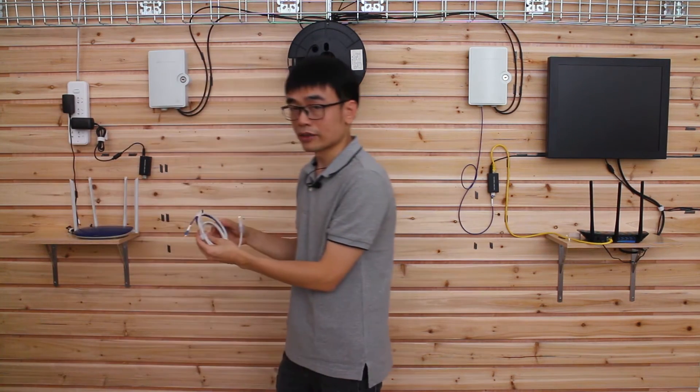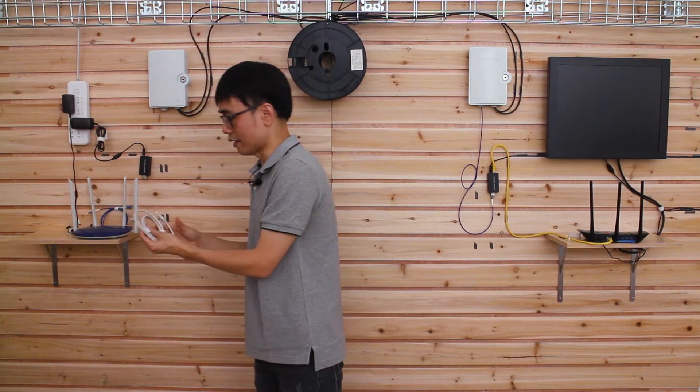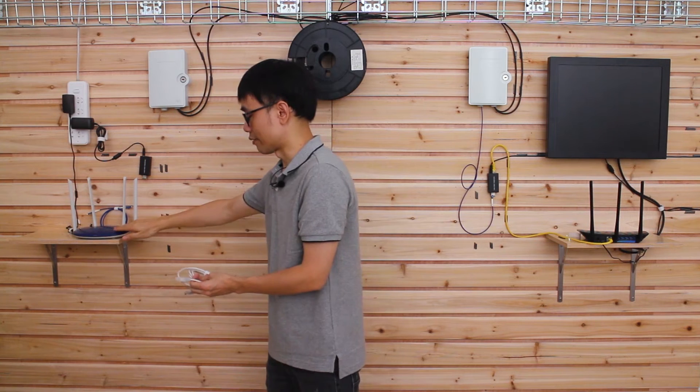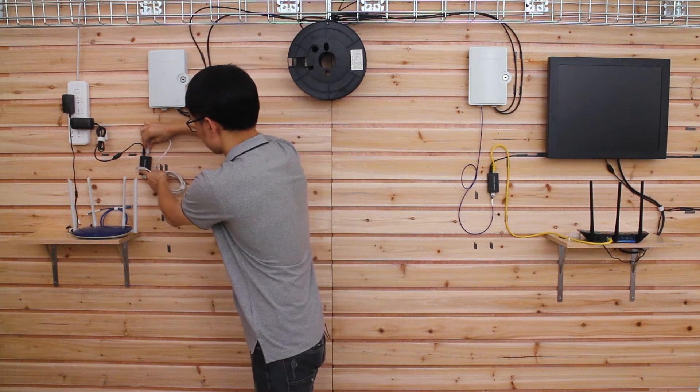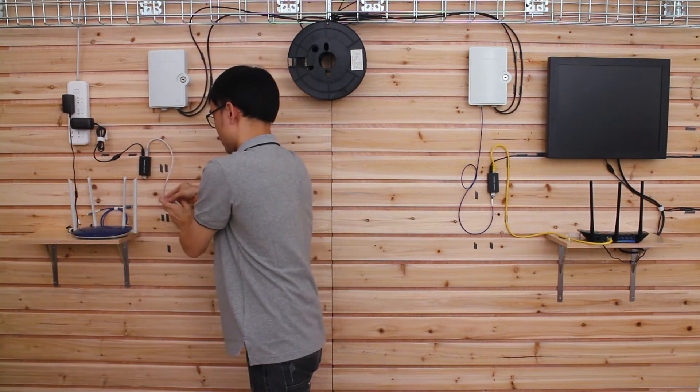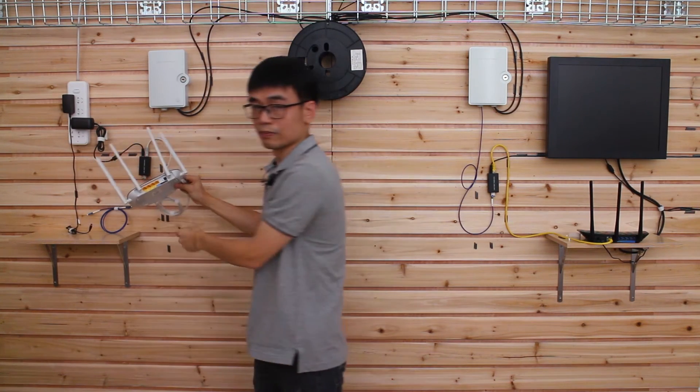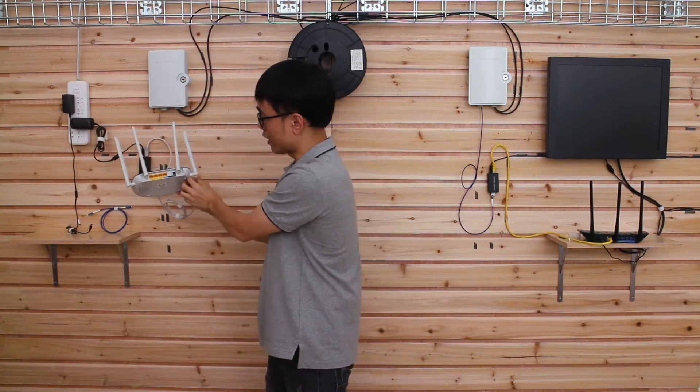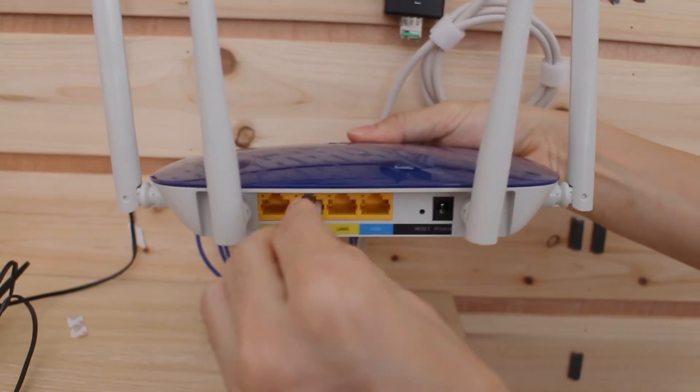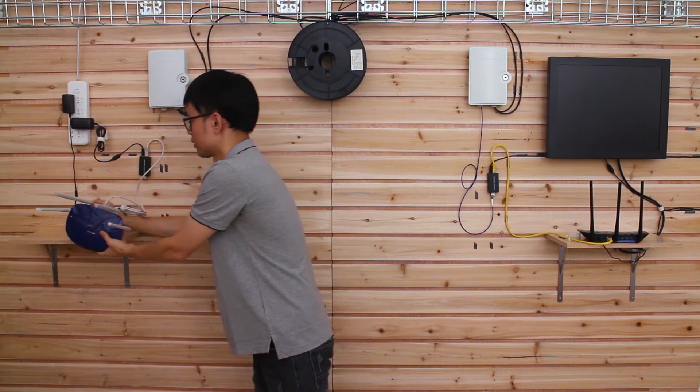From here, I need two short patch cords. The first patch cord is the Cat5e Ethernet cable, so you can link the media converter to the second router. I just need to pick one of the LAN port, not the WAN port, just the LAN port. Also need to power up the second router.